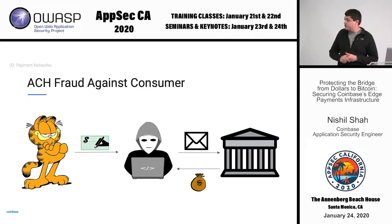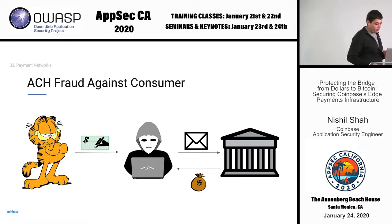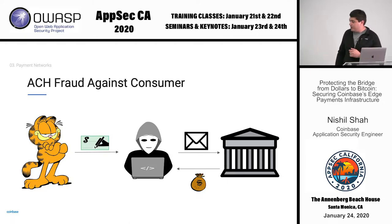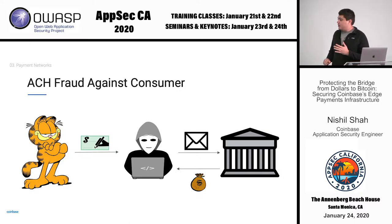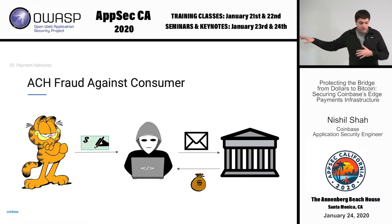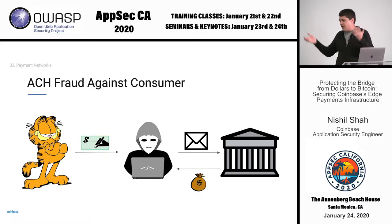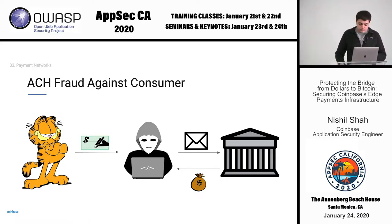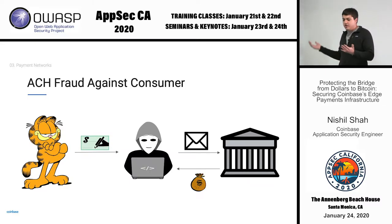Back to ACH fraud. An attacker gets Garfield's check — since only the routing and account number authenticate the payment — tells the bank to give them money, and the bank complies, allowing them to pull whatever amount they want. The protection is you can call your bank to reverse it days, weeks, or even months later. What's particularly interesting is ACH fraud against a merchant: the attacker writes a check, the merchant processes it, the bank gives money, lasagna gets sent. Then the attacker uses the reversal mechanism to claim the transaction was fraudulent — even though they initiated it — committing fraud against the merchant.